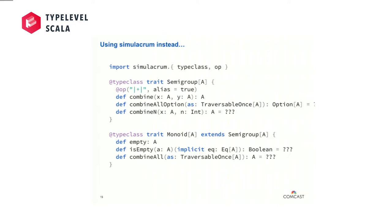You import two annotations — and I know, I don't love annotations either — but you annotate your type classes with @typeclass. As a result, we get all of the boilerplate we've seen: all of the enrichments, the implicit summoning, the infix notation — everything's automatically generated. We get infix notation for every method whose first argument matches the shape the type class abstracts over. Here we would get infix notation for combine, combine_n, as well as is_empty.